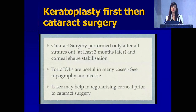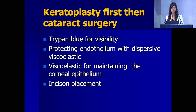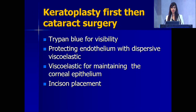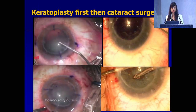When you have already done a keratoplasty and are planning cataract surgery, you have to wait for at least 3 months after all sutures are out. Once you have done a keratoplasty, after 1 year you will start suture removal, wait 3 months, and then do cataract surgery. In one such patient, I considered putting in a toric IOL. Make sure you are protecting the endothelium — use trypan blue and viscoelastic.